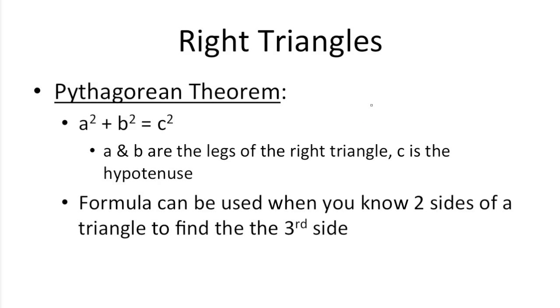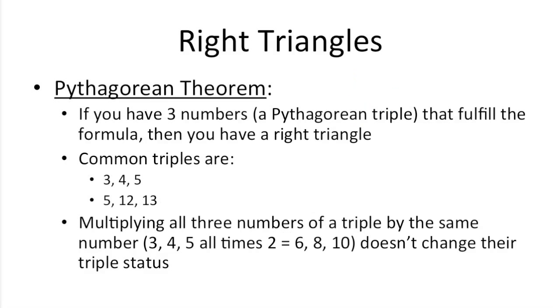So right triangles are always associated with the Pythagorean theorem, which is A squared plus B squared equals C squared. So if you were to look at a right triangle, A and B would be the legs, and C is always the hypotenuse. So you can use this formula when you know the length of two sides of a right triangle to find the third side.